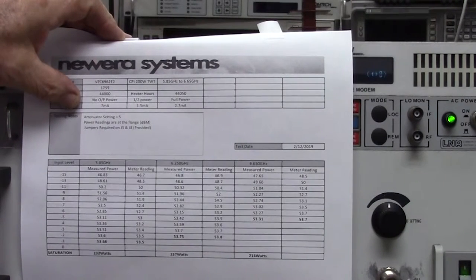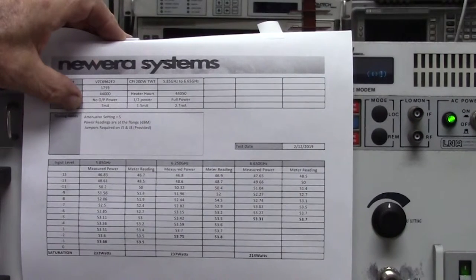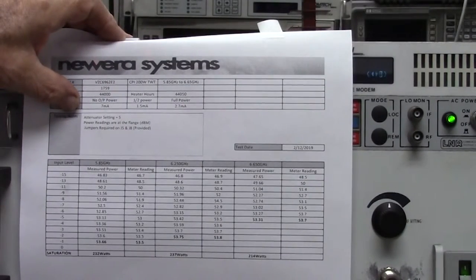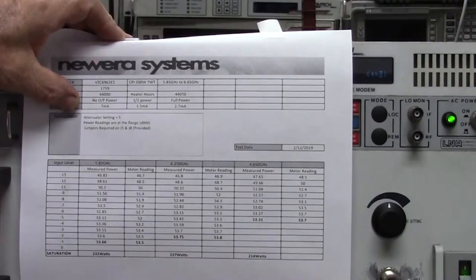It will go higher, but once you get past saturation, the increased power is not usable. So we only measure it up to saturation. And this is a 200 watt amplifier, and at saturation it's 232 watts. Another thing of interest in here is the helix current, because of course the helix current shows the health of the tube, and at no power it's 7 milliamps, at maximum power it's 2.7 milliamps. That is an outstanding value for a TWT.